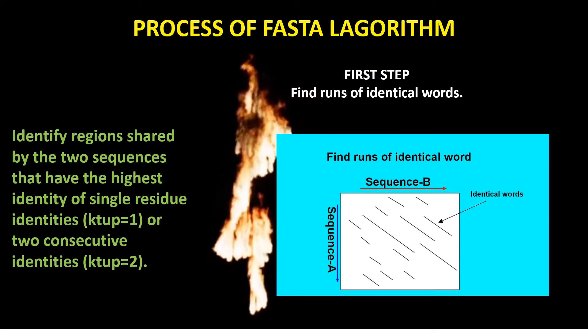Process of FOSTA algorithm. There are four steps in the FOSTA algorithm process. The first step is to find runs of identical words. This will identify regions shared by the two sequences that have the highest identity of single residue identities (K-tup equals 1) or two consecutive identities (K-tup equals 2). Observe the diagram which gives the result of the first step.